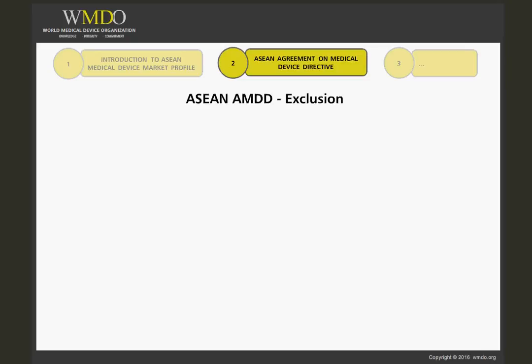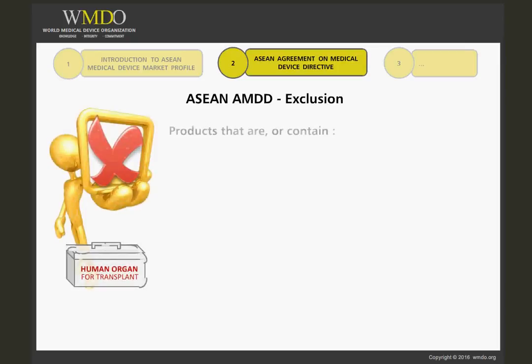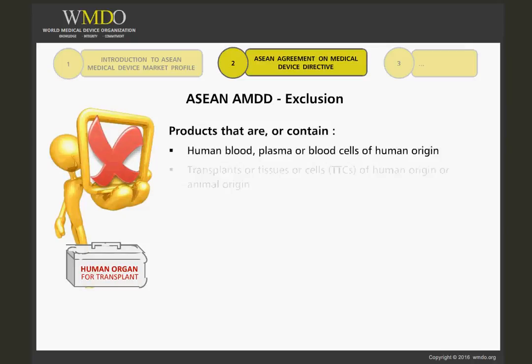At this juncture, it is important to mention that some categories of therapeutic products are not covered by the ASEAN AMDD. Products that are or contain human blood, plasma or blood cells of human origin, or transplants or tissues or cells of human or animal origin are not covered by the ASEAN AMDD. Examples include human organs for transplant or blood donations.